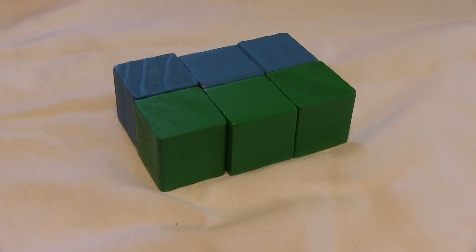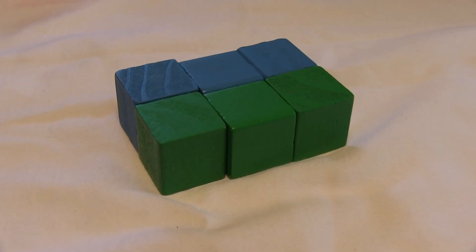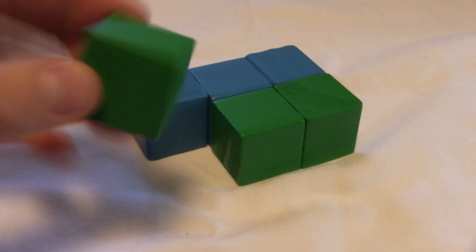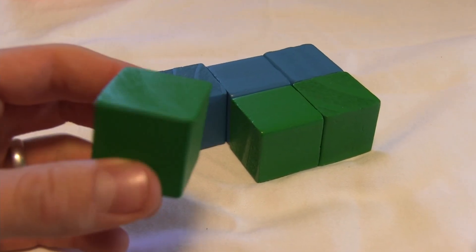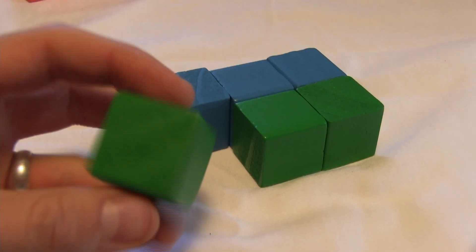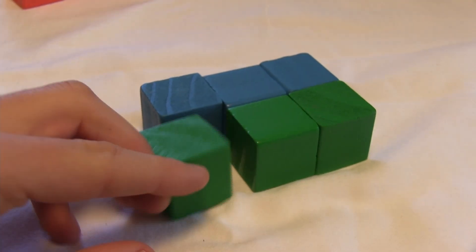Daniel at the Assessment Toolbox here. We are talking about volume with unit cubes. Now, each one of these is a cube. A cube has the same size face on all of its sides. It's going to have six of those, and each one of those is the same size as each other.